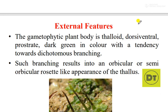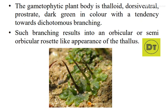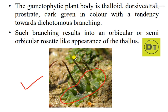I am going to talk to you about external and internal morphology — external morphology and external features. Looking at this picture of the Anthoceros plant, this is a thalloid. The prostrate part is the gametophytic portion, and this part is the sporophytic part.